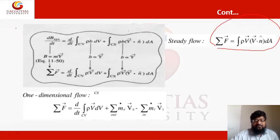In case of multidimensional flow, d by dt will be there. The total force acting will be the sum of rate of change of rho V dV over the whole control volume plus m dot V out minus total m dot V in.